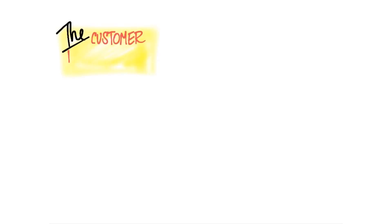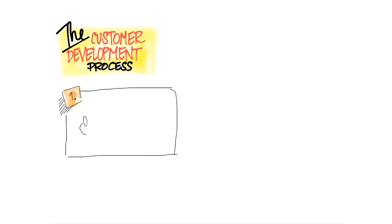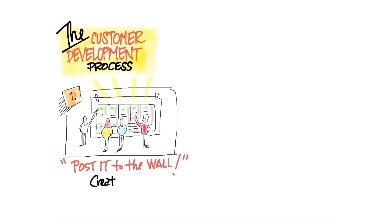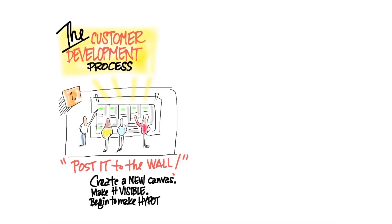One of the really interesting developments about this class is the customer development process. You start with your business model canvas hypotheses — you blow up the canvas and post it to the wall. You use yellow stickies, no pens or pencils allowed, because you are going to get most of them wrong. But you make it visible and begin to construct your hypotheses.